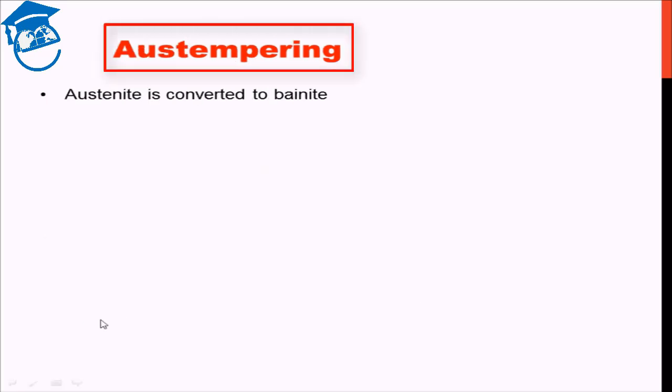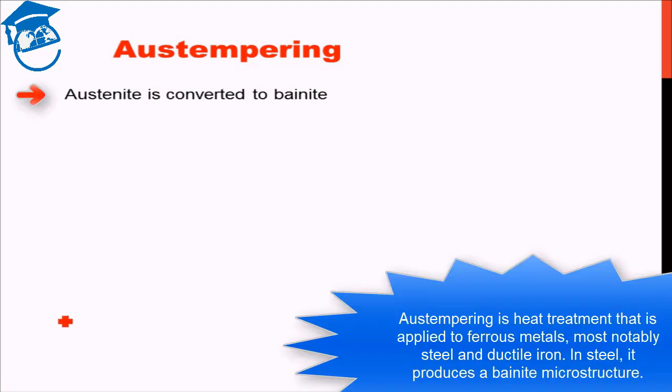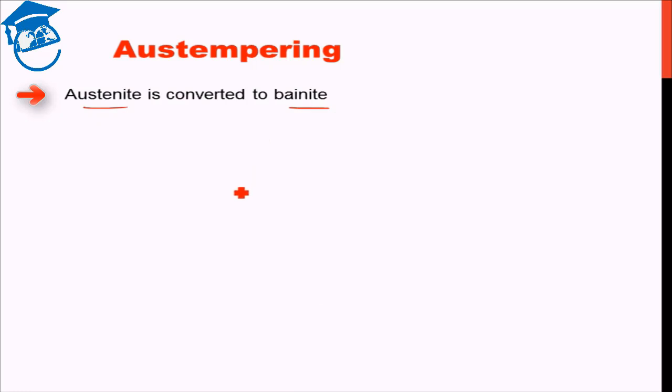Now, let us discuss austempering. Austempering is a heat treatment process in which austenite is converted to bainite. I will use the CCT curve or the TTT curve to show you what exactly is happening in the austempering process.